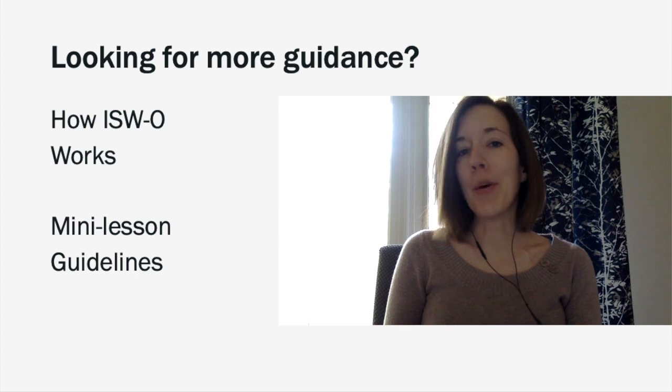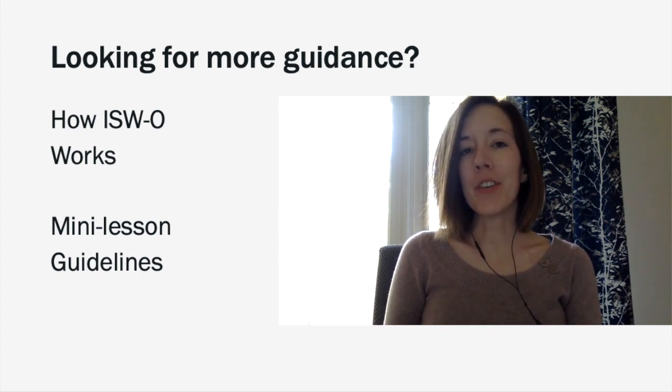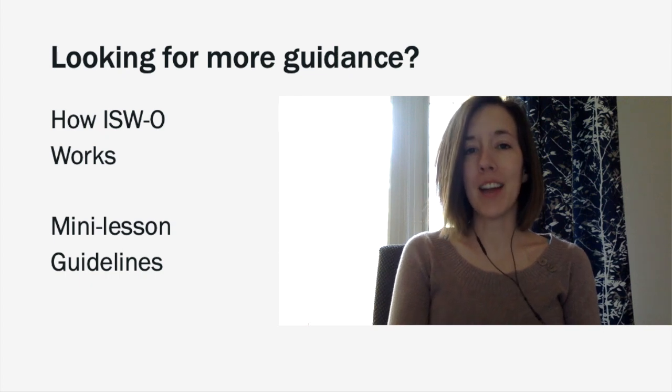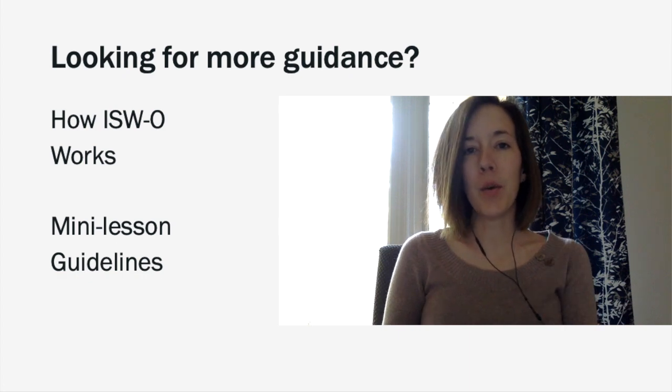If you're still unsure about ISWO and how it all works, not to worry. There are two lessons in the first week that will help orient you to the workshop: the first is called 'How ISWO Works' and the second is called 'Mini Lesson Guidelines.' Each week you will also find a to-do list and a self-assessment quiz to help make sure you're on track. If after completing the first lessons you still have any questions, be sure to write those down. We'll be meeting synchronously online at the date and time listed below this video to help answer any unanswered questions about your participation in the ISWO.